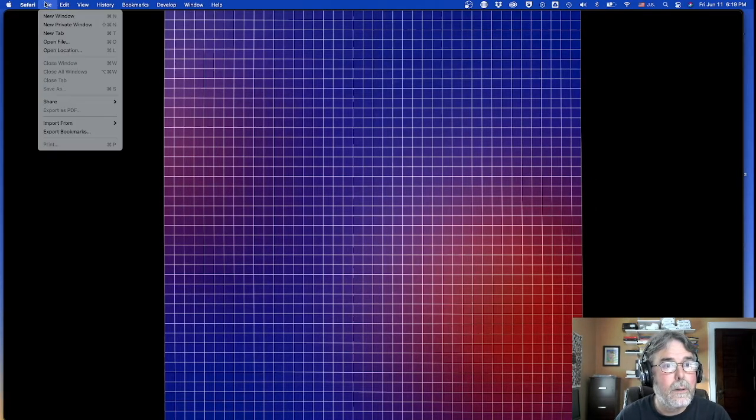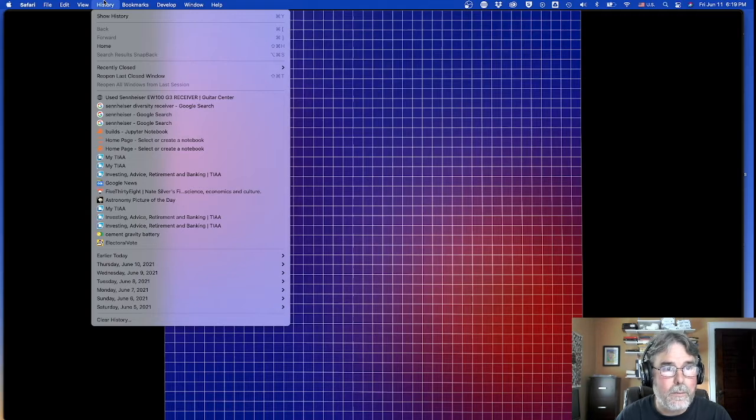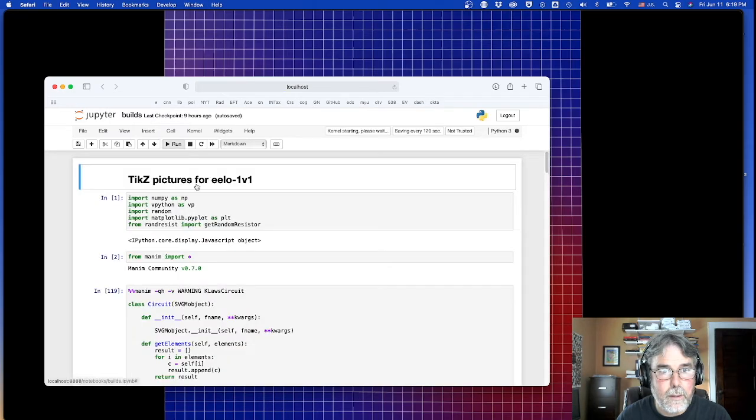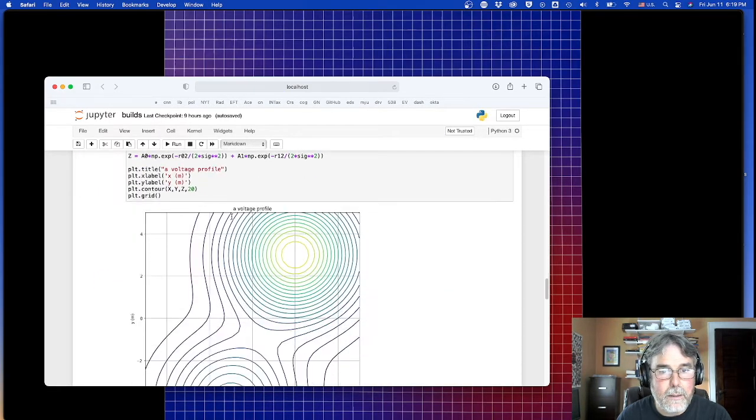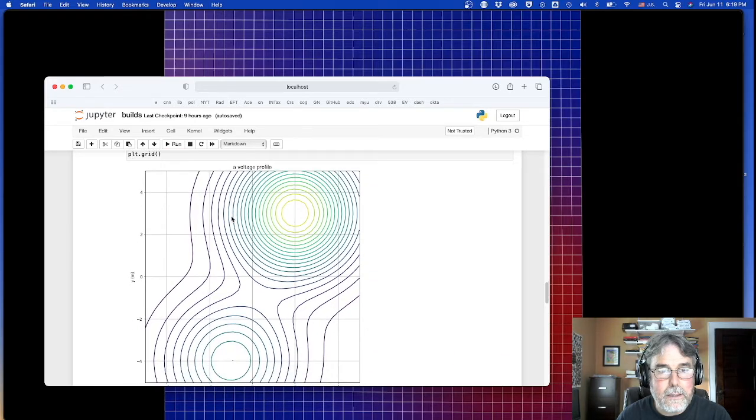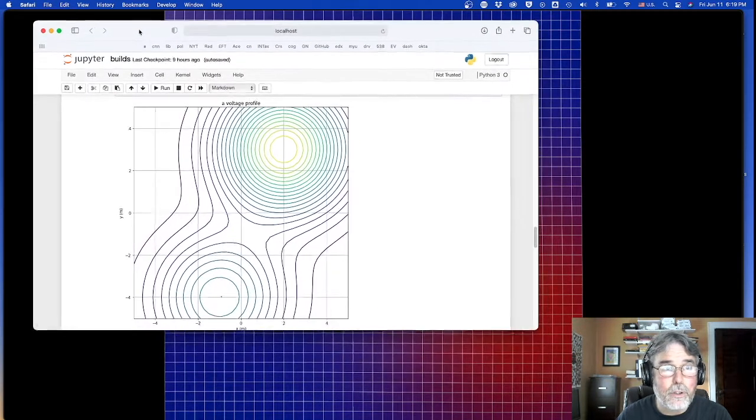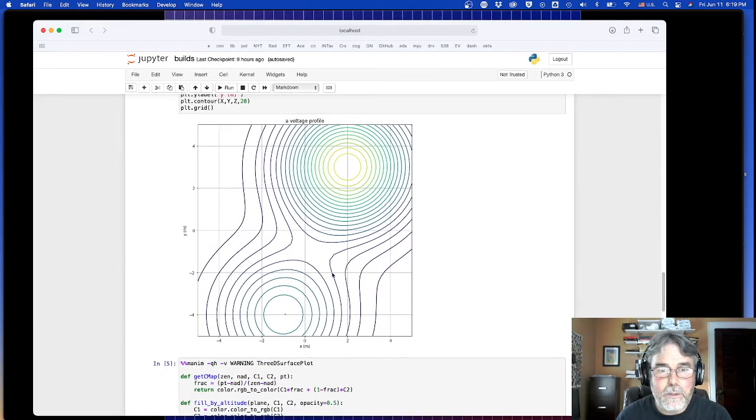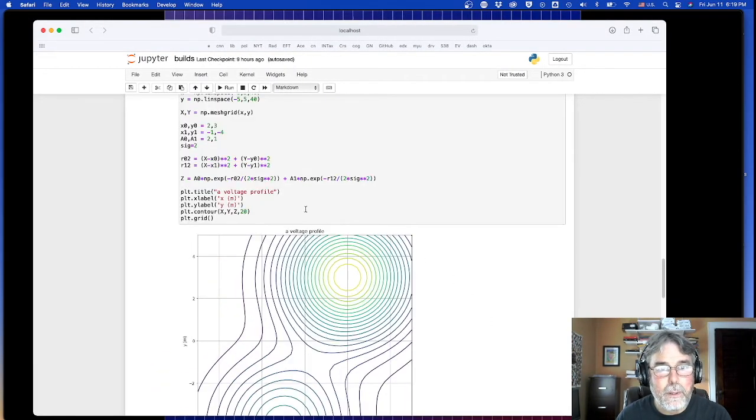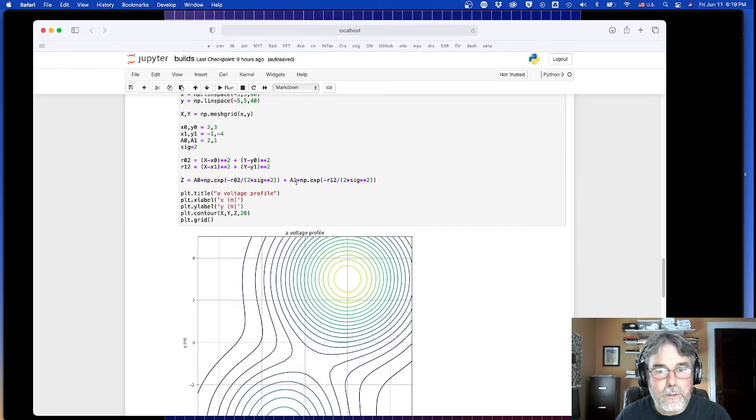I want to begin by making an analogy with hiking. So when you go hiking, you might be fortunate enough to have a topological map, a topo map they call it. It looks something like this. This is actually a mathematical topo map. I generated it with a couple of Gaussian curves.